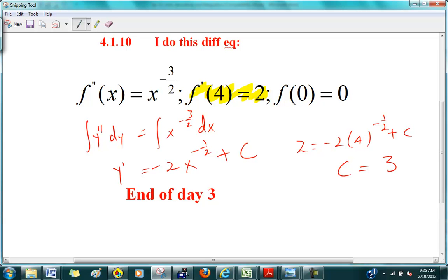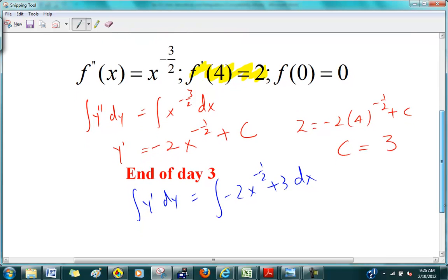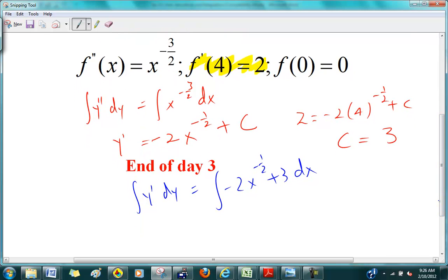Everybody okay on that? And then, you're going to integrate one more time. You're going to integrate one more time. So, you're going to get y prime dy. And on this side, you're going to get minus two x minus a half plus three dx. What do I get on the left-hand side? Just y. Because if I integrate y double prime, I get y prime. If I integrate y prime, I get y. Okay, and then what's on the right-hand side? Minus two x to the minus a half. Negative four x to the half plus three x plus c.